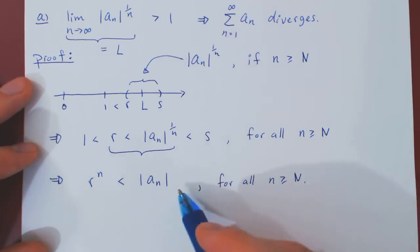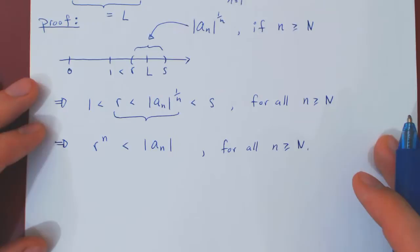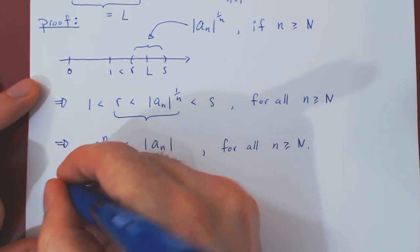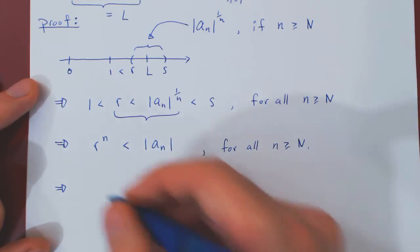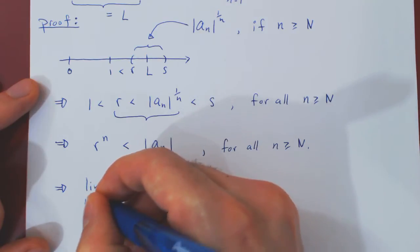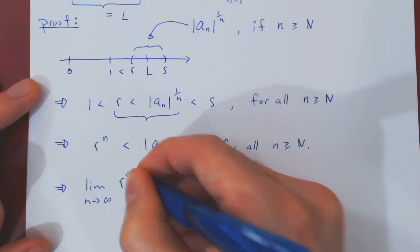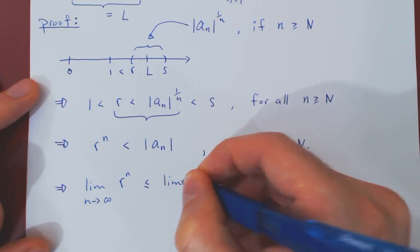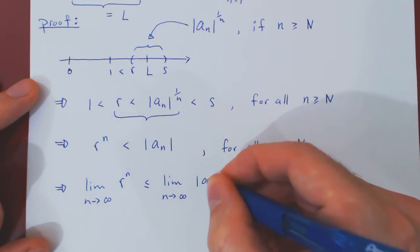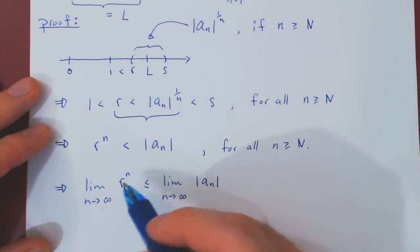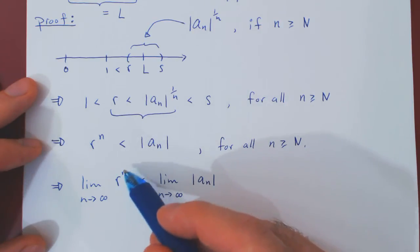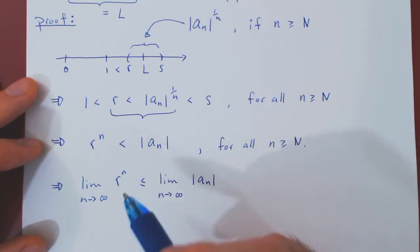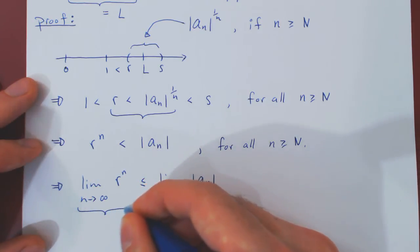And this is of course for all lowercase n larger than uppercase N. And now, all we can do here is let lowercase n tend to infinity. What will be the implication? As this term is less than a_n for n's that are big enough, then it must be true that the limit as n tends to infinity of the smaller terms will be at most the limit as n tends to infinity of the larger terms. But what we have here is a very simple limit. As R is strictly bigger than 1, we are taking larger and larger powers of a real number that is larger than 1. This will get bigger and bigger, it will grow out of bounds, it will simply blow up to positive infinity.